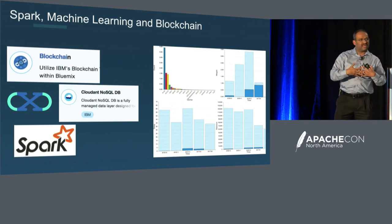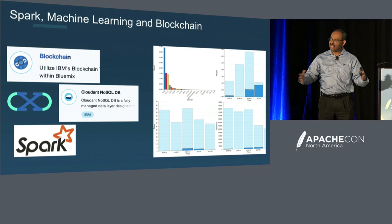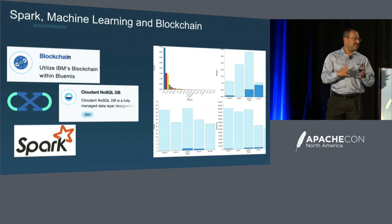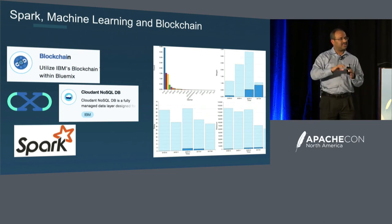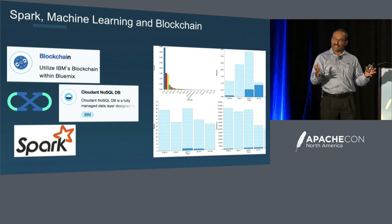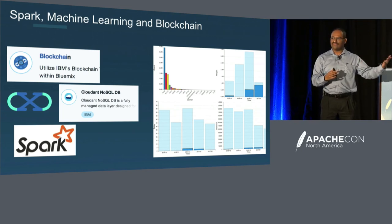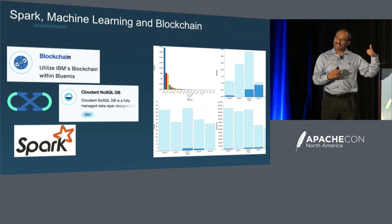Spark basically allows connectivity to different data sources, provides a pipeline for your ML, and enables very interesting use cases. Blockchain is another hot topic these days. Here is an example where we are using Spark connectors into data held in a blockchain environment — a supply chain blockchain. We are looking at supply chain data and trying to understand or predict delays in shipments. Shipment delays could happen because of many different things related to the supply chain itself, or things related to what is being shipped.